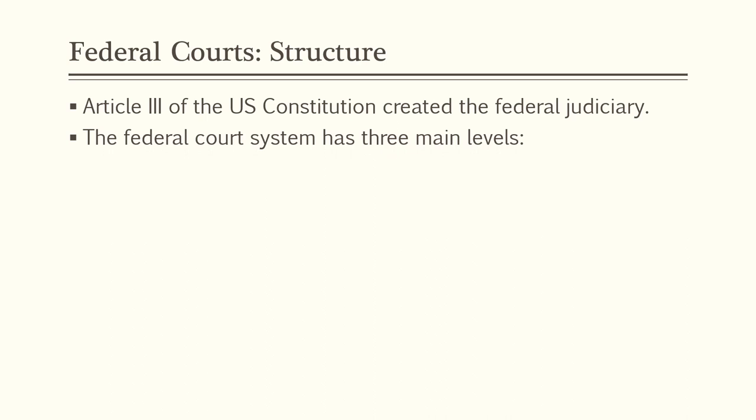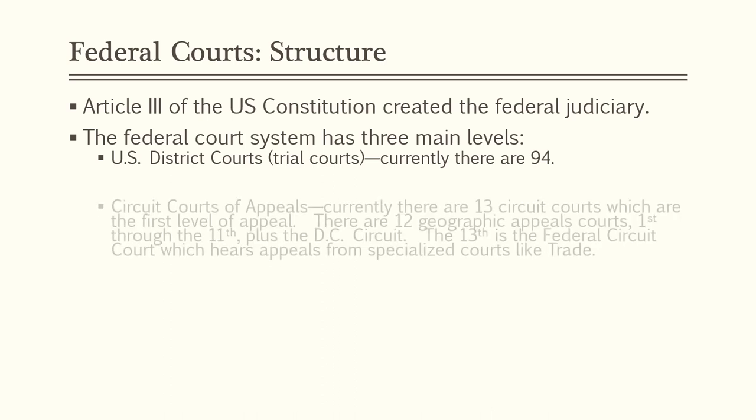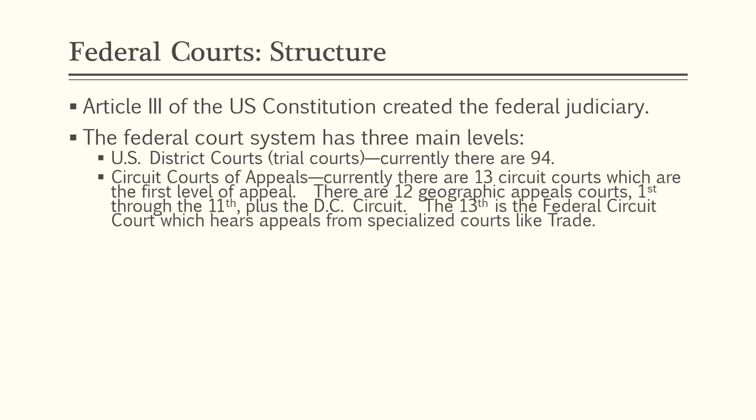The federal court system has three main levels. The U.S. District Courts — they are the trial courts. Currently there are 94 district courts throughout the United States. The next level is the Circuit Courts of Appeals. This is your appeal of right in the federal system.